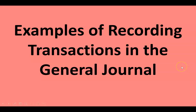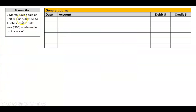Let's look at some examples of how to record transactions in the general journal. We'll try and do one of everything that we know. Let's start with a sale. On the 2nd of March there's a credit sale of $2,000 plus $200 GST to Jay Johns. The cost of sale was $900, and the sale was made on invoice A1.